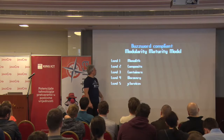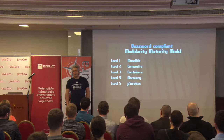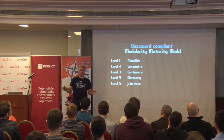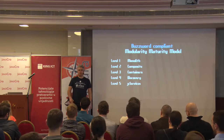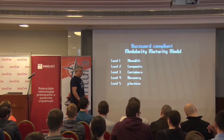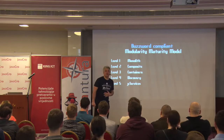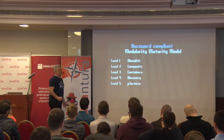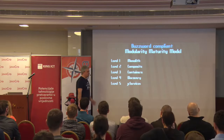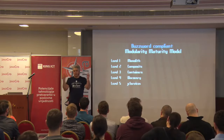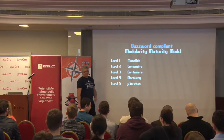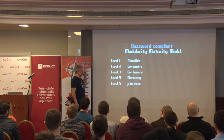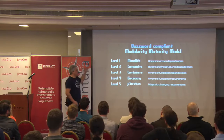When preparing this talk, I decided to make my own buzzword-compliant modularity maturity model, because we are all buzzword-driven these days. How many of you do microservices? Big data? You know how it works — you hear the buzzword, you go home, and you start doing stuff just because everyone else seems to be doing it. So the five buzzword levels are: monolith, composite, containers, discovery, and microservices.